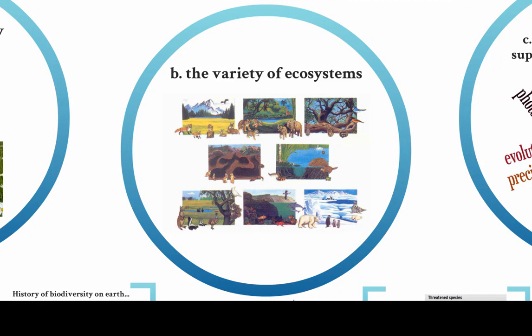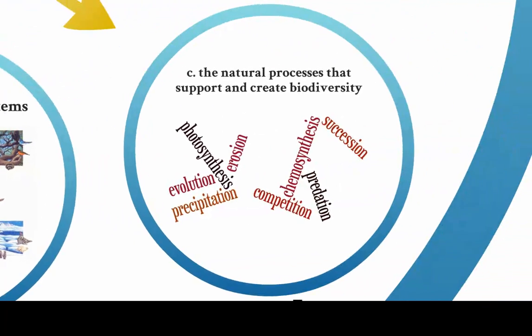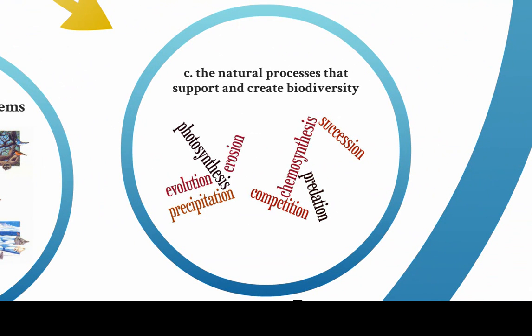Biodiversity also includes the variety of ecosystems on the planet. So we have rainforests and we have tundra and aquatic ecosystems and grasslands. There are different species in each of those — some have more species, some have less.